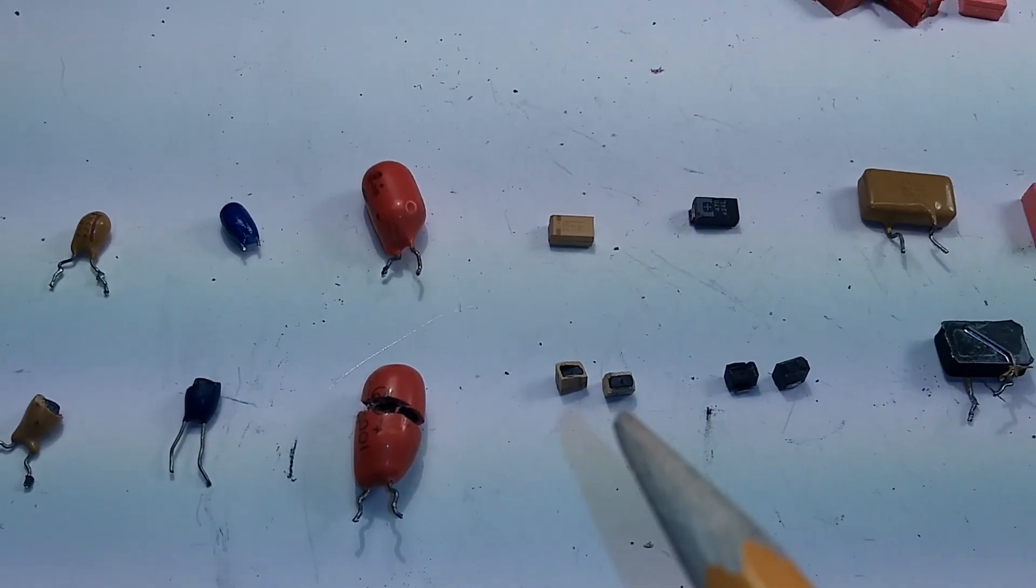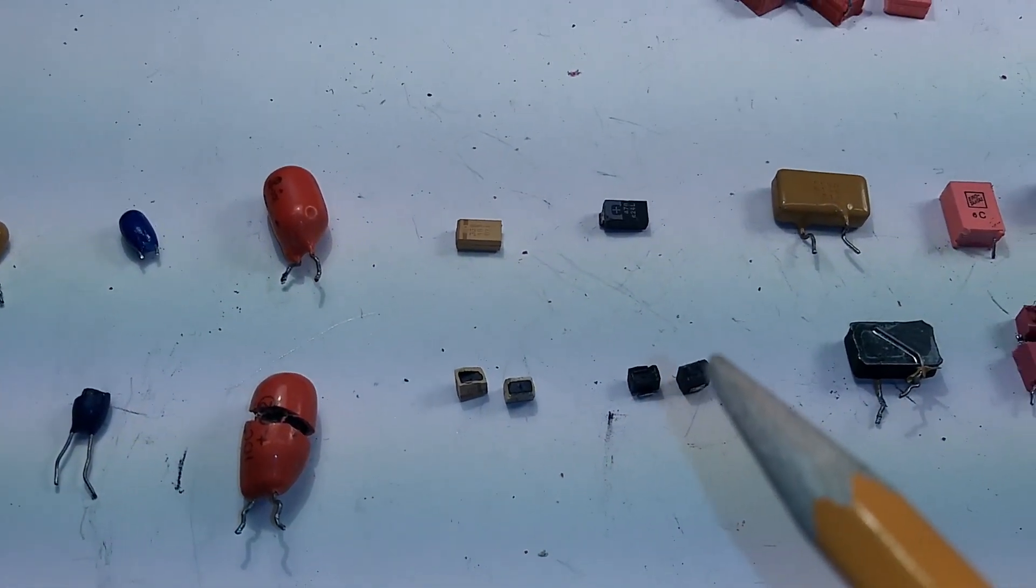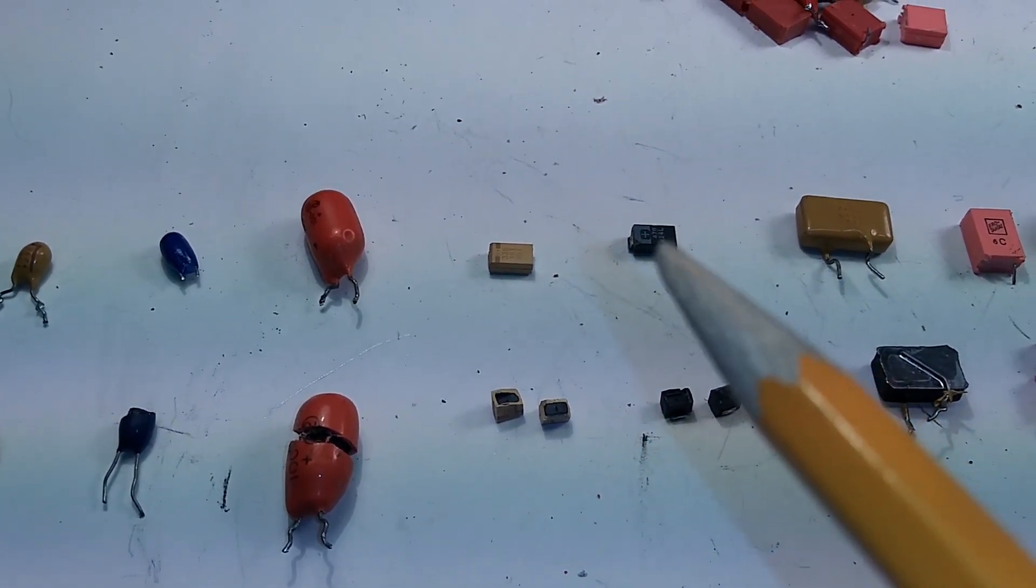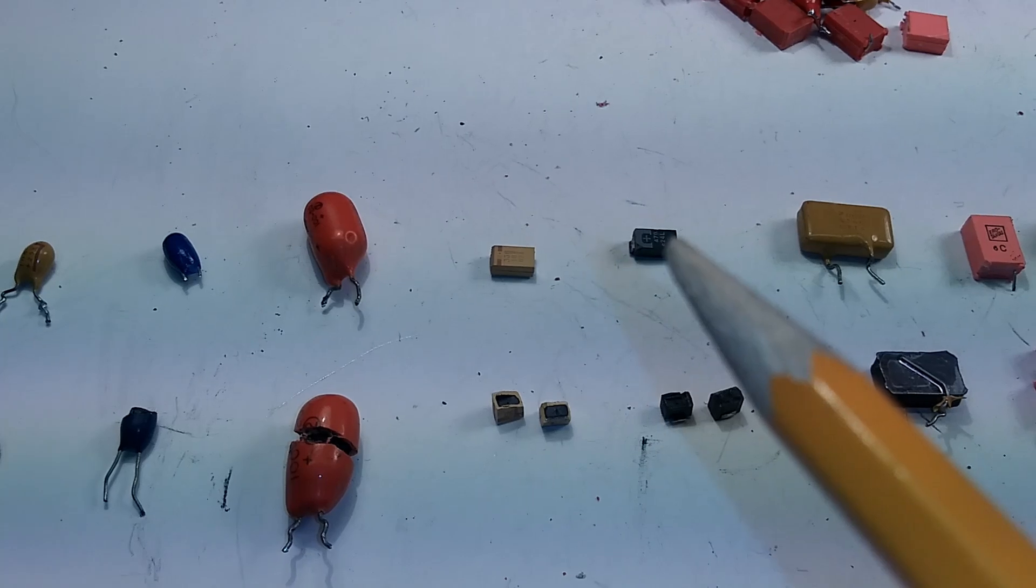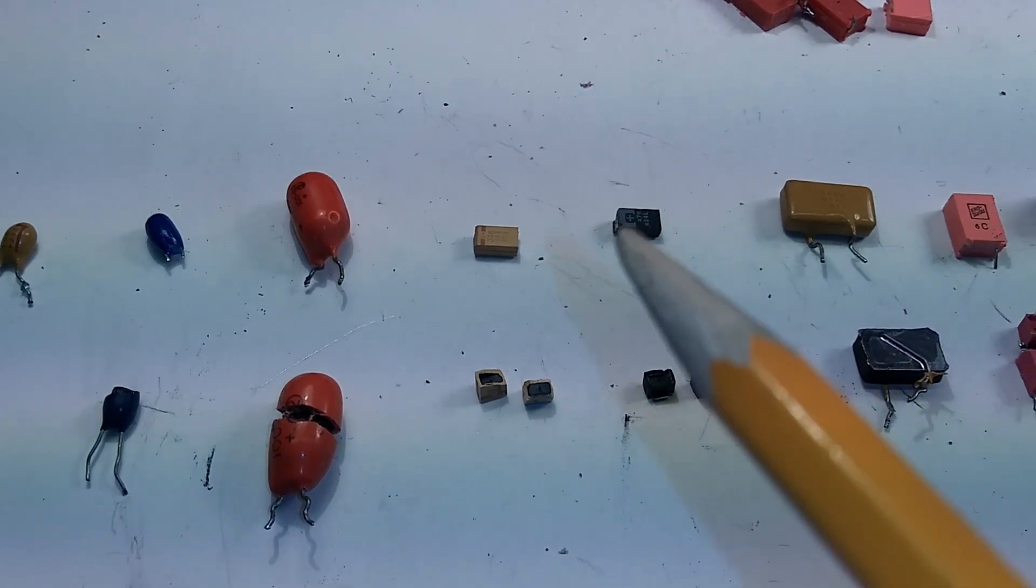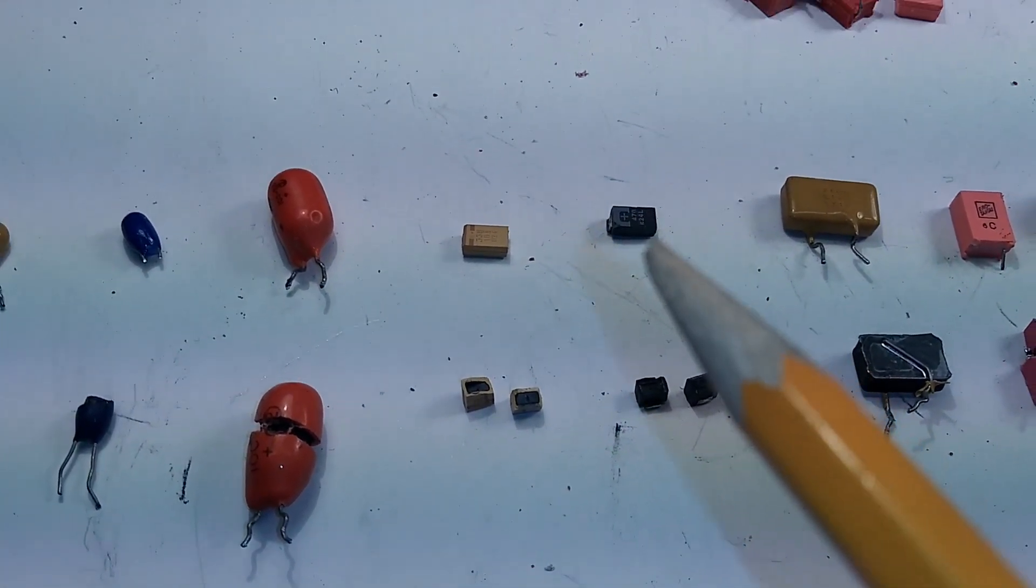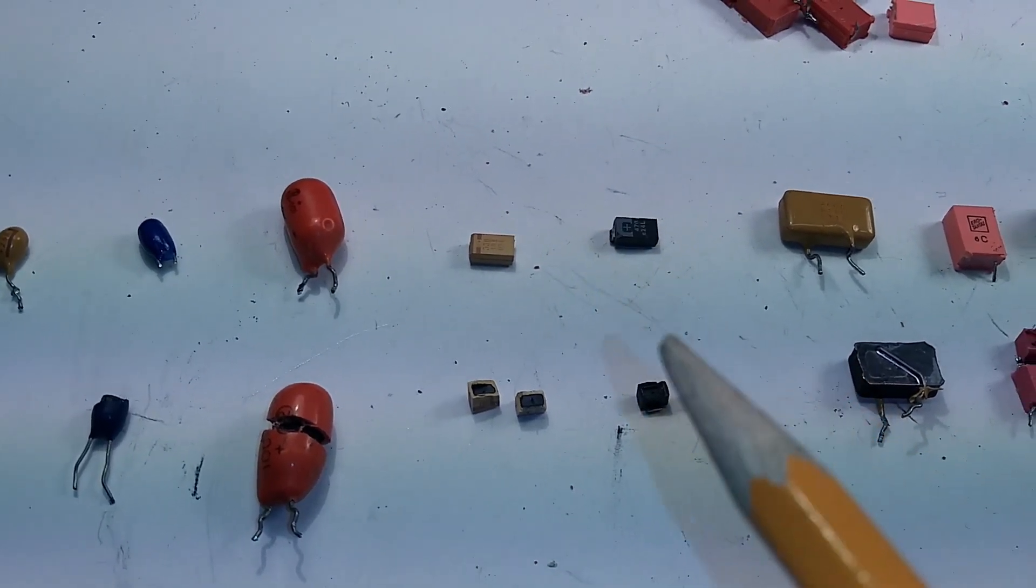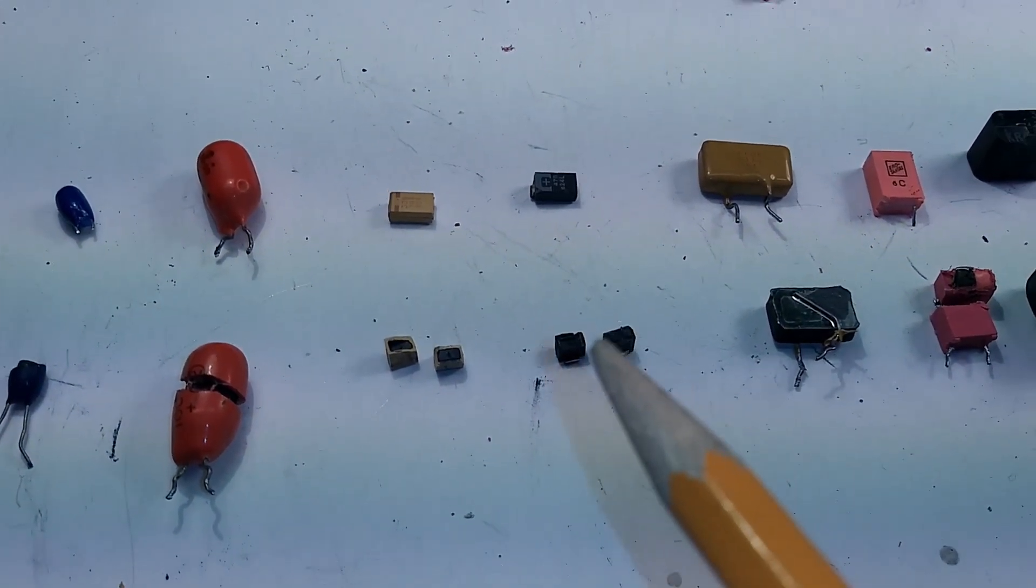The one next to it is very similar. In fact, it is a tantalum capacitor, but it's black. And again, it's got the line on it and it's got the actual value. I can't really read what this one is, but again it'll be something like 47 microfarad 16 volts. Now don't get confused because diodes look very similar to these tantalum capacitors, black ones.